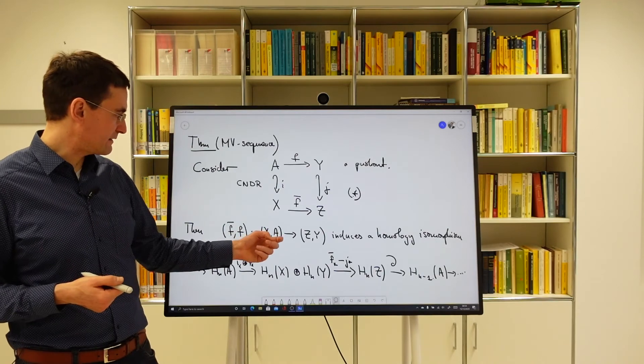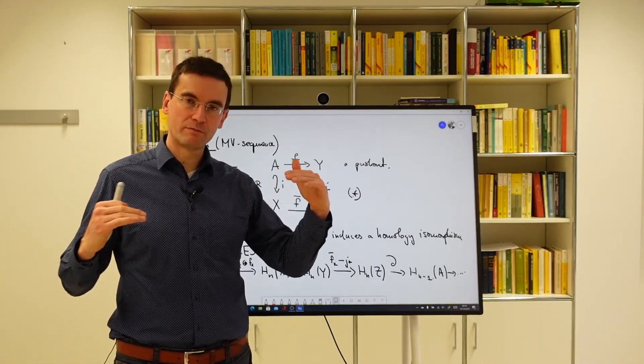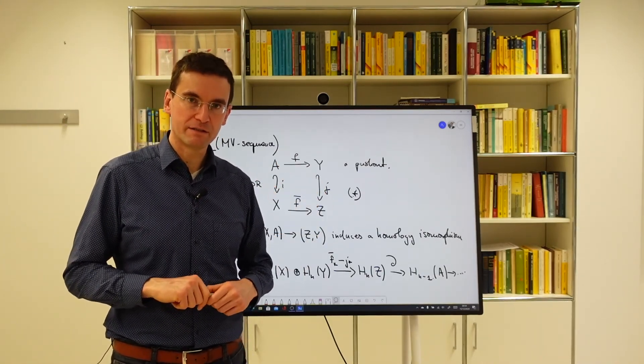So we would look at, repeating the proof, the previous proof we would look at two pair sequences. Maybe the pairs X, A and Z, Y. And then we were looking at a commutative ladder of these pair sequences.